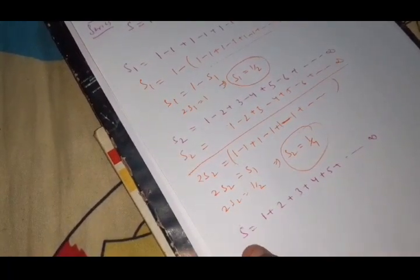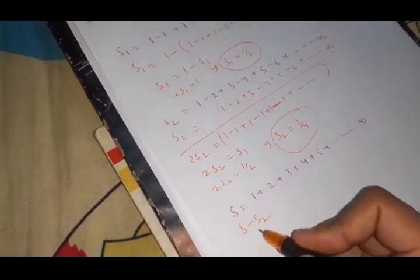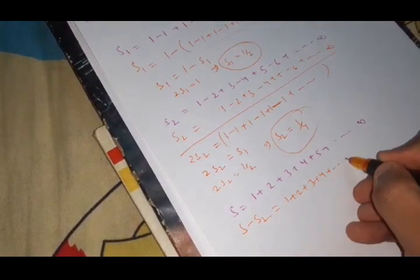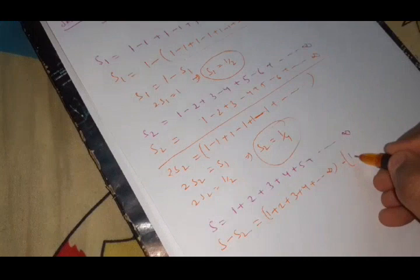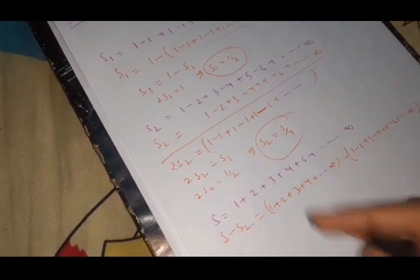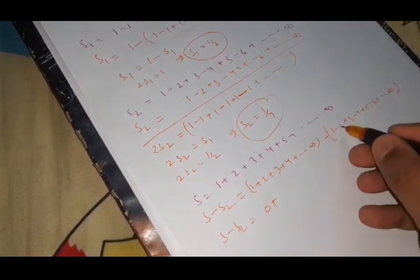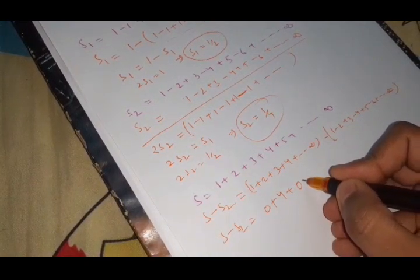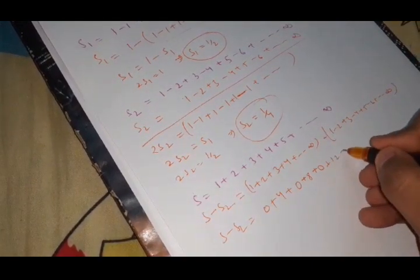Now, we have the series S that we need to prove as minus 1 by 12. Now, what we will do? We will do S minus S2. S minus S2, what we will get? S is this minus S2. What is S2? S2 is this. 1 minus 2 till infinity. Now, what we are getting? 1 minus 1 is 0. 2 minus minus 2 means 2 plus 2 is 4. 3 minus 3 is 0. 4 minus minus 4 means 4 plus 4 is 8. Similarly, 5 minus 5 is 0. And 6 minus minus 6 means 6 plus 6 is 12. So we are getting a series like this.